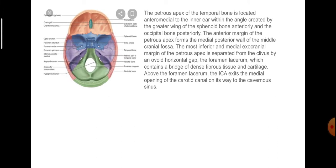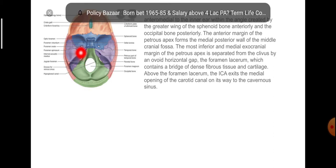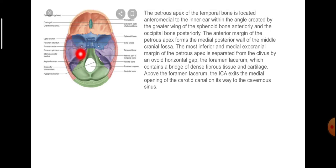The petrous apex of the temporal bone is located anteromedial to the inner ear, within the angle created by the greater wing of sphenoid bone anteriorly and the occipital bone posteriorly. The anterior margin of the petrous apex forms the medial posterior wall of the middle cranial fossa. The most inferior and medial exocranial margin of the petrous apex is separated from the clivus by a small ovoid horizontal gap called the foramen lacerum, which contains a bridge of dense fibrous tissue and cartilage.